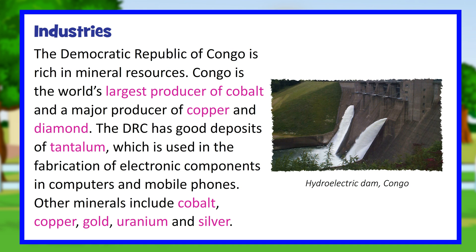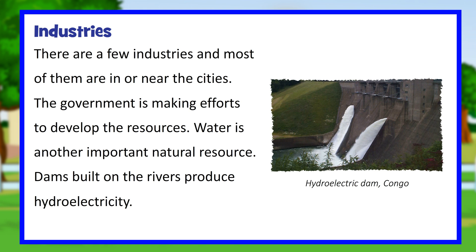The Democratic Republic of Congo is rich in mineral resources. Congo is the world's largest producer of cobalt and a major producer of copper and diamond. The DRC has good deposits of tantalum, which is used in the fabrication of electronic components in computers and mobile phones. Other minerals include cobalt, copper, gold, uranium and silver. There are a few industries and most of them are in or near the cities. The government is making efforts to develop these resources. Water is another important natural resource, and dams built on the rivers produce hydroelectricity.